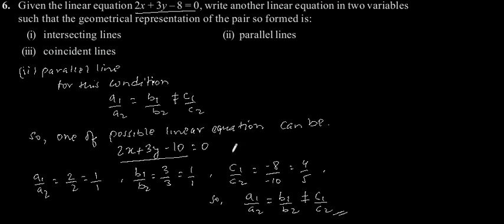So here we can clearly say a1 by a2 is equal to b1 by b2, which is not equal to c1 by c2. So this can be one of the possible linear equations for parallel lines.